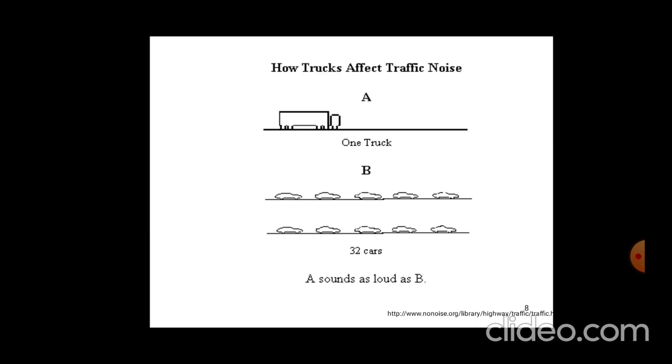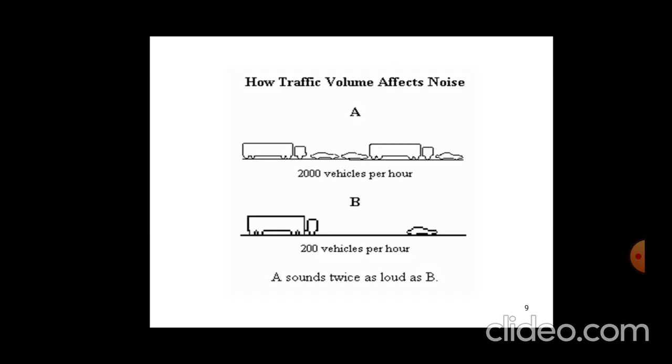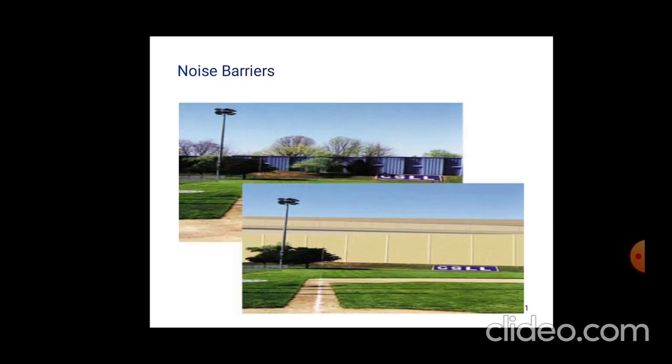How traffic volume affects noise: A shows 2000 vehicles per hour, B shows 200 vehicles per hour. In condition A, maximum road crowding means maximum noise compared to B, which has less crowd. This is a good technique to control noise.